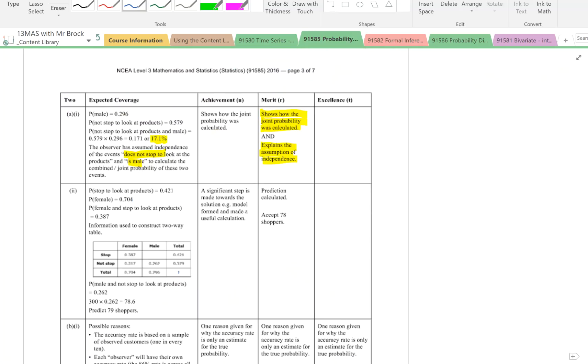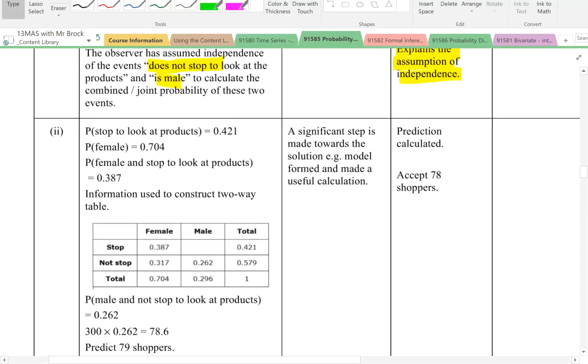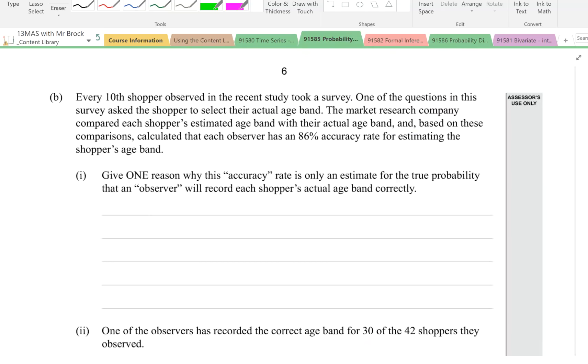Marking scheme. It's a merit if you have the prediction calculated. And it said that except if you rounded down to 78 shoppers too.